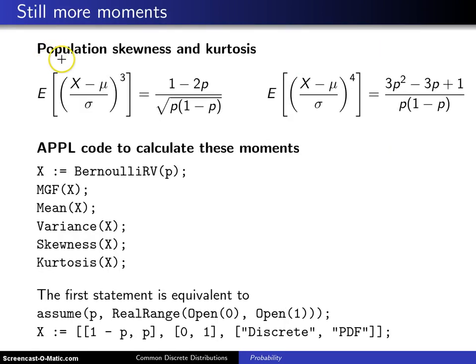On the next slide we look at the population skewness and kurtosis. I saved you the details of working through these, but here is the population skewness and here is the population kurtosis. Again, these are very nice expressions, mathematically tractable and they can be expressed in closed form.